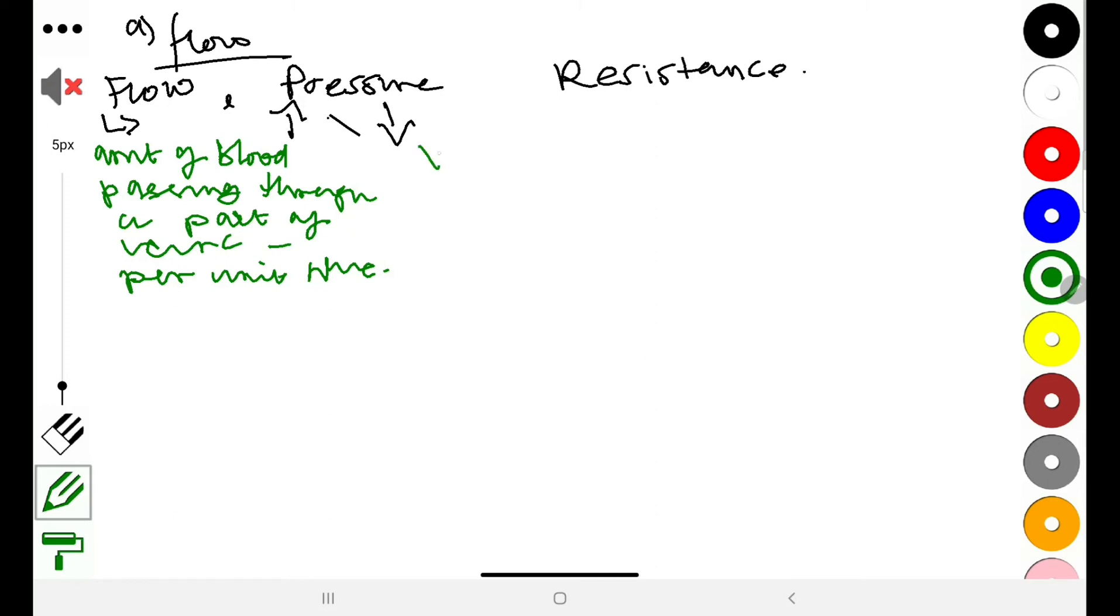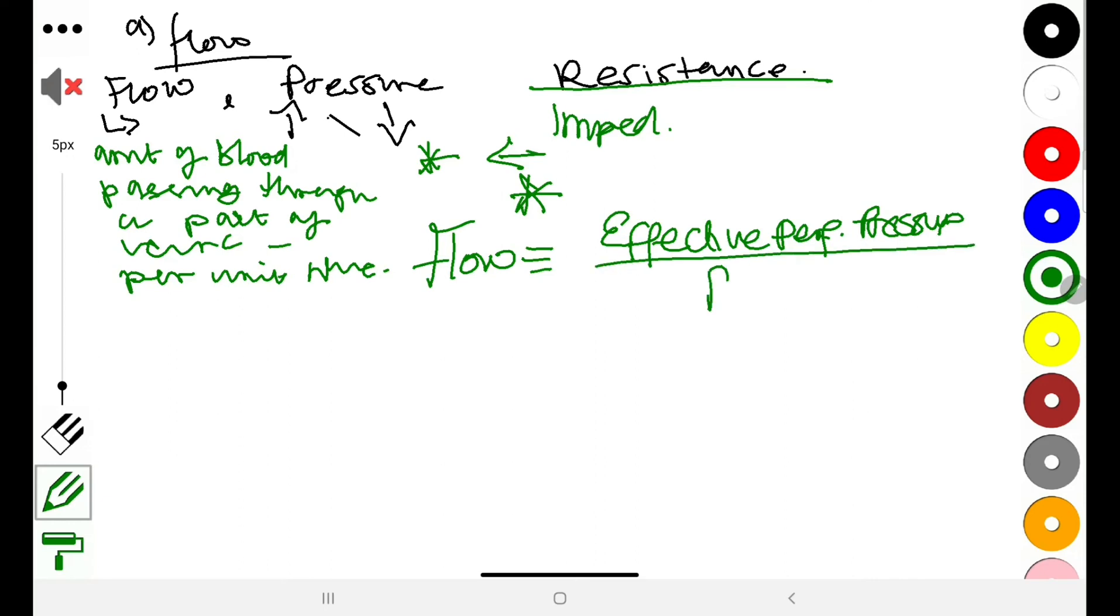We have pressure gradient as a driving force, and when this is stopped or blocked, we call that resistance. If you put these three together, you can say the flow is equal to the effective perfusion pressure divided by the resistance.